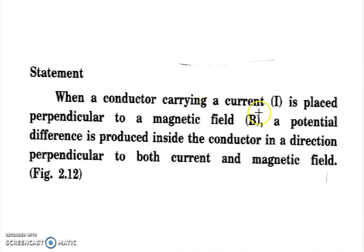When a conductor carrying current I is placed perpendicular to a magnetic field B, a potential difference is produced inside the conductor in a direction perpendicular to both current and the magnetic field. This is the Hall Effect.